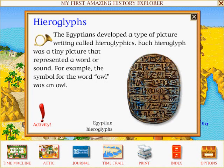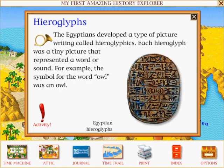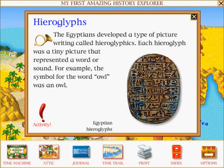The Egyptians developed a type of picture writing called hieroglyphics. Each hieroglyph was a tiny picture that represented a word or sound. For example, the symbol for the word owl was an owl.